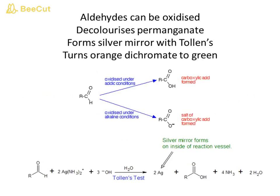Aldehydes can be oxidized: they decolorize permanganate, form a silver mirror with Tollens' reagent, and turn orange dichromate to green.